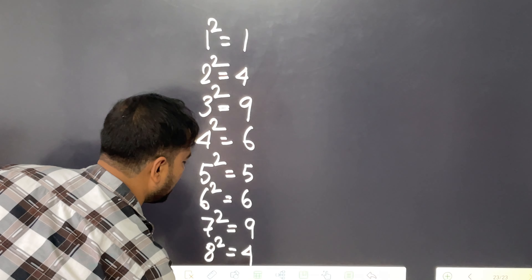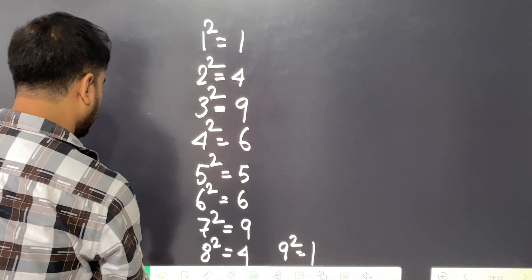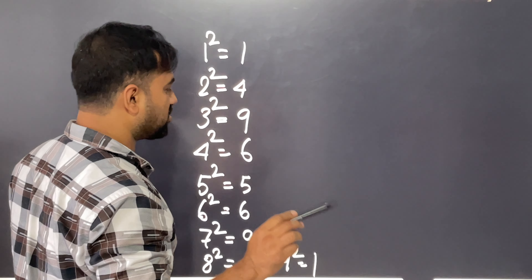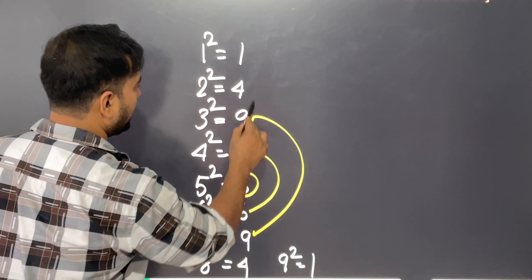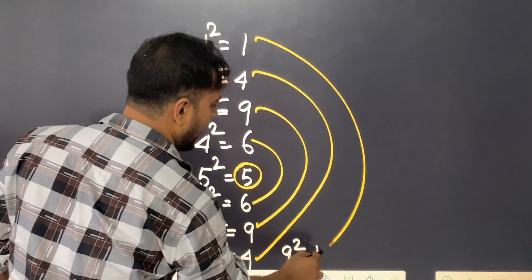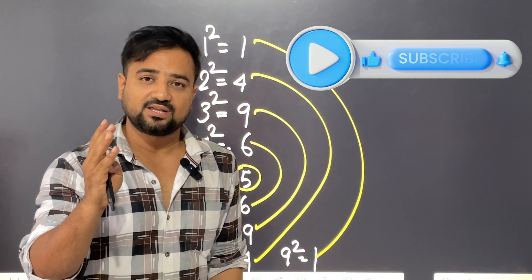1 squared is 1, 2 squared is 4, 3 squared is 9, 4 squared is 6, 5 squared is 5, 6 squared is 7, 7 squared is 49, 8 squared is 4, 9 squared is 81 — the last unit digit is 1. If you see the difference, the unit digits are: 5, 6, 9, 4, 1.